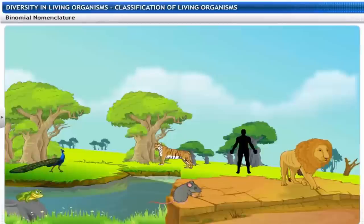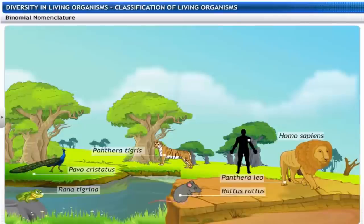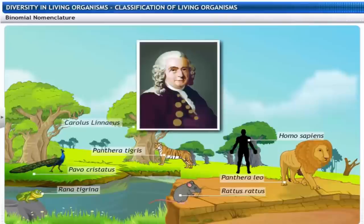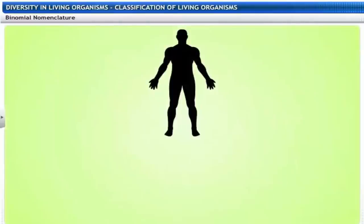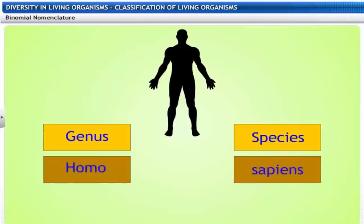Another important landmark in the history of classification was the development of the system of scientific naming or nomenclature, introduced by Carolus Linnaeus. When we name an organism, we write the name of the genus first and the species later. Both of these are Latin words. This method of naming an organism is called binomial nomenclature.